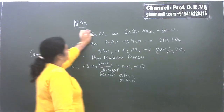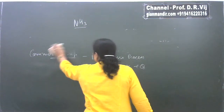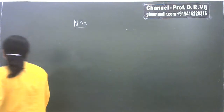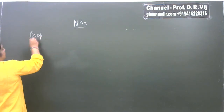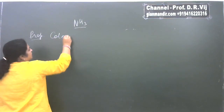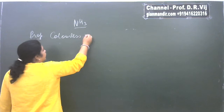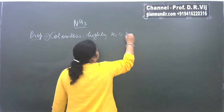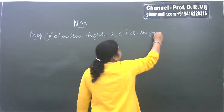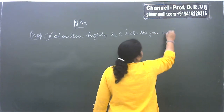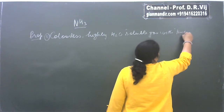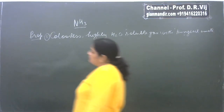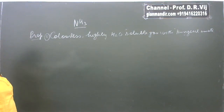Now looking at the properties of ammonia: as you know, it is a colorless, highly water-soluble gas with a pungent smell — a very typical, sharp smell, which is also called its ammoniacal smell. The characteristic smell of ammonia is known as its ammoniacal smell.